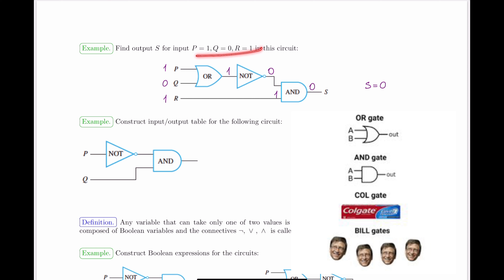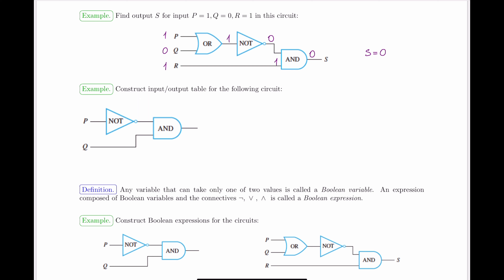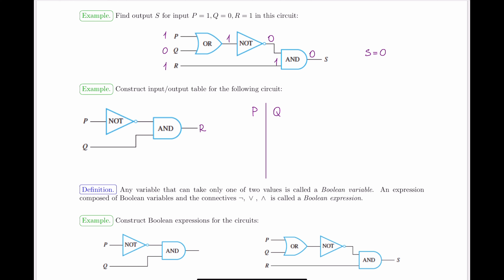This was straightforward because we were given three particular values for the input wires, so we could trace it all through. The more comprehensive case is when we're given just the circuit and asked to construct an input-output table for the whole thing — meaning we must consider all possible input values and produce all possible output values. With two inputs P and Q, we have four different combinations, and we trace each through the circuit to find the resulting output R.